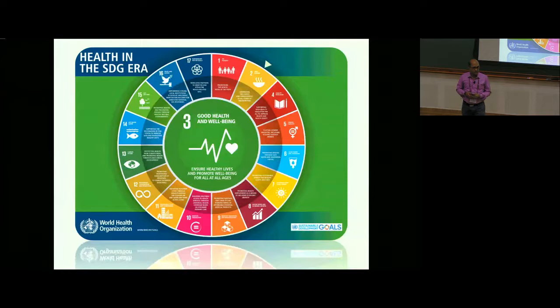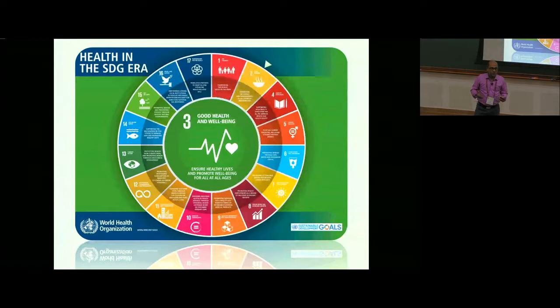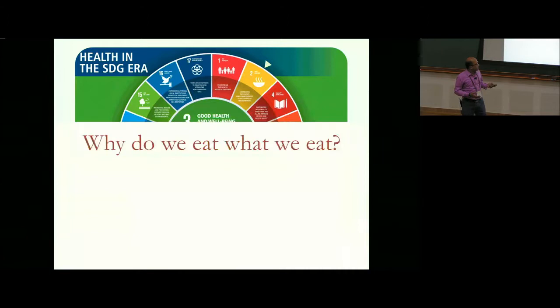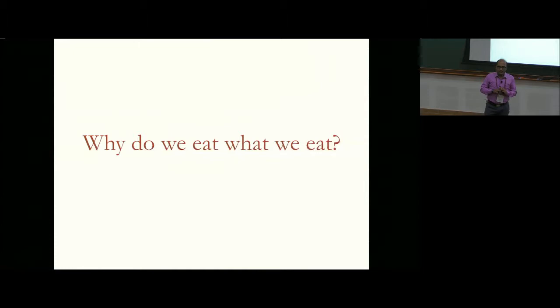The United Nations Sustainable Development Goals include food as a key component, ironically from two perspectives: ensuring there is no hunger, but also saving us from overnutrition, which is possibly causing some of the problems we face today. While this seems like a policy problem, we started by asking a very simple and curious question: why do we eat what we eat?